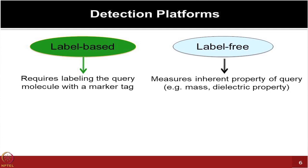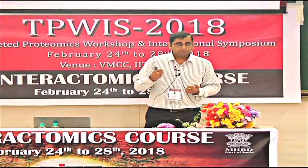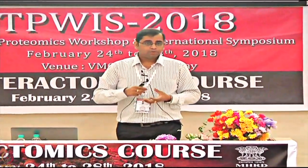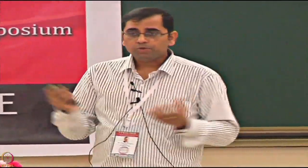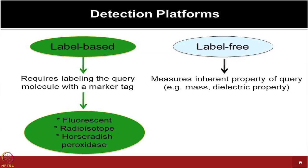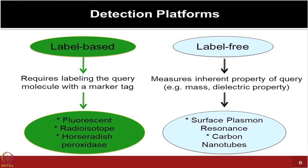If two molecules are binding, what kind of mass is getting changed? What kind of dielectric properties are getting changed? Do we see some percentage reflectivity change because of binding intensity? Can we see some interference change? Many physical principles are being used to look at molecules and molecular interactions. For label-based readouts you use fluorescent, radio-isotope, or HRP-based systems; for label-free you have SPR and nanotechnology-based platforms like carbon nanotubes.